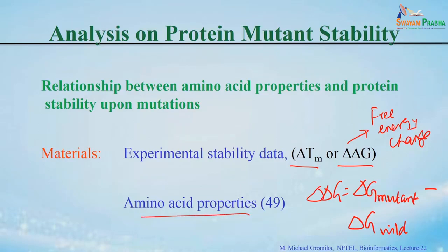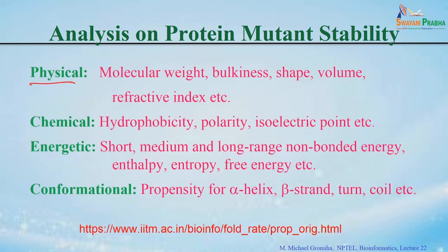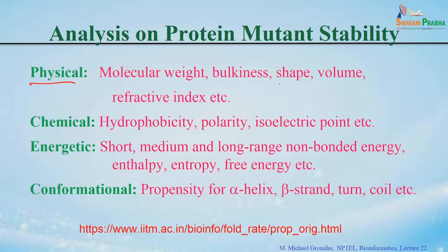Properties can be taken from different perspectives. For example, physical properties like molecular weight — glycine has less weight than other residues — and bulkiness, shape, volume, and refractive index. There are also several chemical properties such as hydrophobicity and polarity, isoelectric point, and so on.